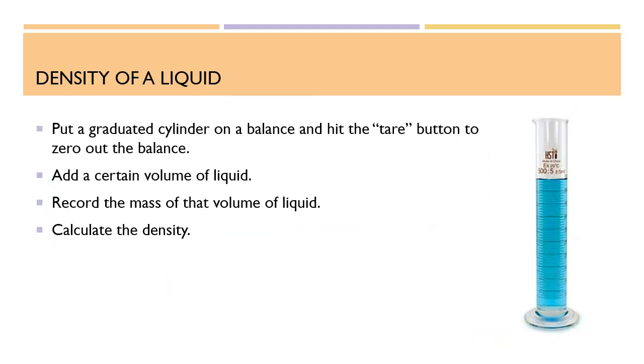Now determining the density of a liquid is a little bit different. First you'll put a graduated cylinder on a balance, hit the tare button to zero it out, add a certain volume, and this will be your milliliters, record that mass, which will be your grams, and use the formula to calculate density.